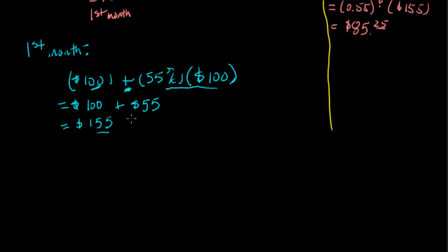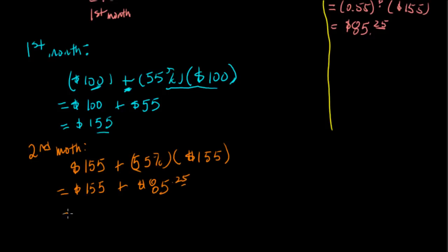Now this value becomes our old value, our standard, for the second month. All right? Let's change our little pen. For the second month, we started with our old value of $155, which we owe in the first month. And 55% of that number, which is $155, becomes $155, plus, we did this earlier if you remember, it's $85.25. You add it together, now we owe $240.25.